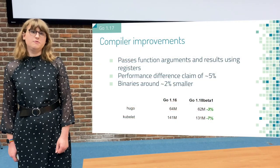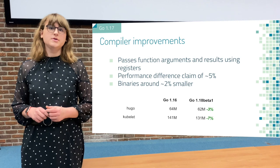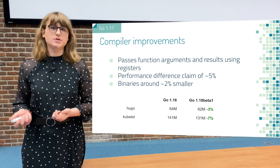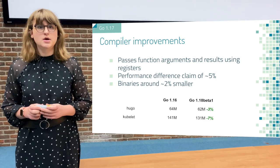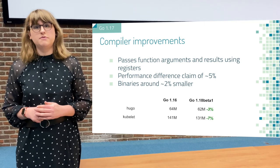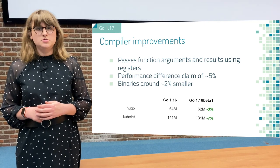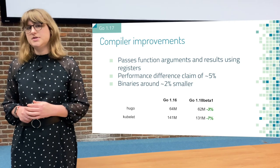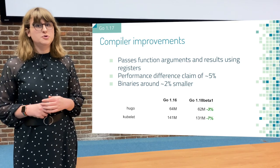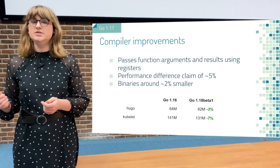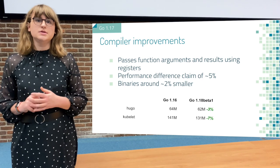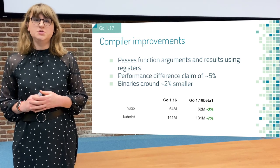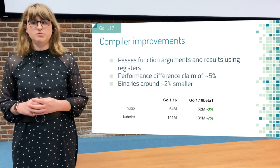Up next, we're going to talk about changes to the Go tooling. Let's take a look at some compiler improvements in Go 1.17. The compiler will now pass any function arguments and results using registers instead of the stack. This gives us around a 5% performance increase. The Go compiler also now produces binaries which are around 2% smaller. We compiled Kubelet and Hugo using Go 1.16 and the latest beta of Go 1.18. We saw a 3% improvement in the Hugo binary, which is now smaller, and even 7% for the Kubelet.